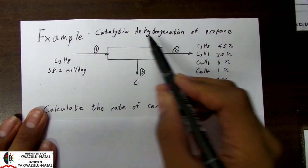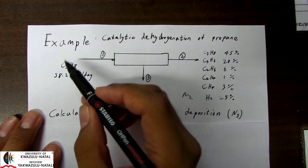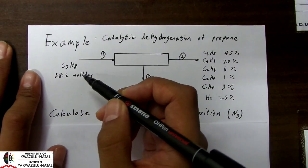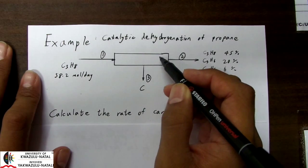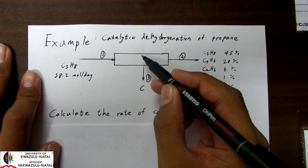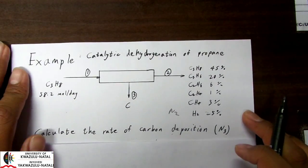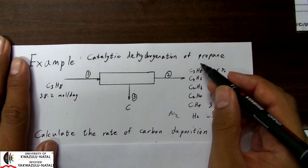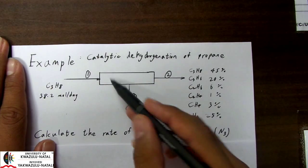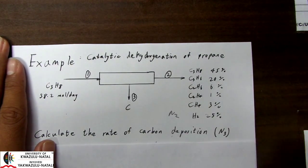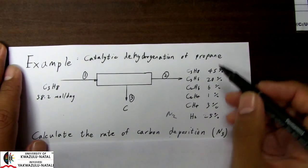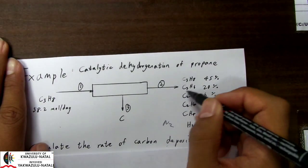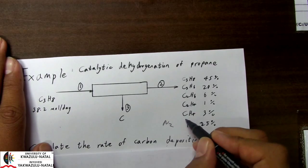Now let's consider a simple example: the catalytic dehydrogenation of propane. We have propane coming in as a single species at a flow rate of 58.2 moles per day. It is catalytically dehydrogenated — in other words, a catalyst is used to convert our propane into various products. As you can see, there are many products being produced: C3H8, C3H6, C2H6, C2H4, CH4, and H2. This implies a very complex reaction mechanism taking place, not something that we can easily define.